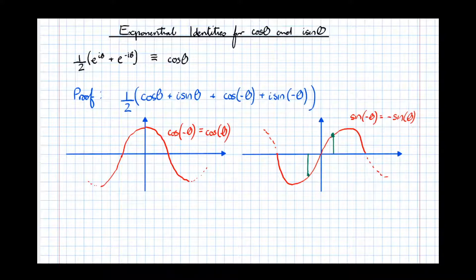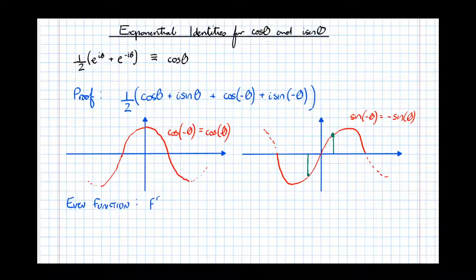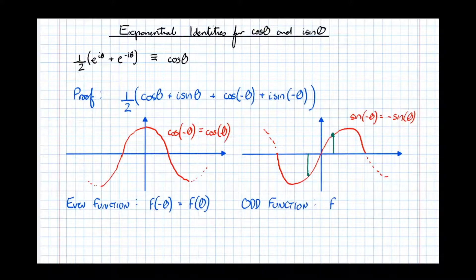Just for the record — you don't need to know this for A-level — but a function that is symmetrical about the y-axis is called an even function, where f(−θ) = f(θ). This sine function has rotational symmetry about the origin; this is called an odd function, where f(−θ) = −f(θ). These are useful to know if you go on to a maths degree or higher-level mathematical studies.